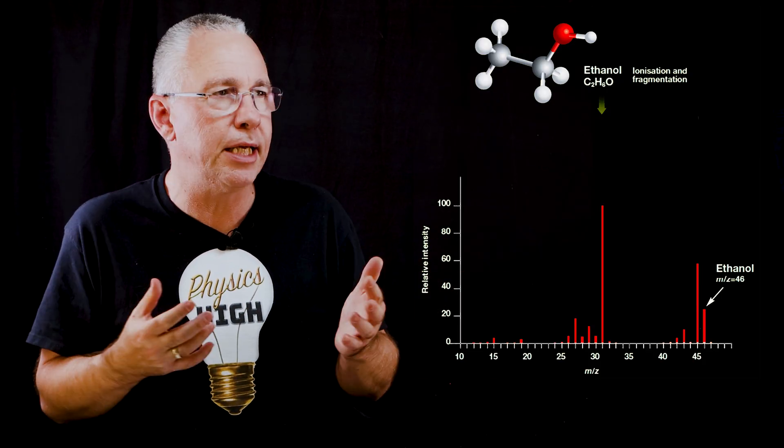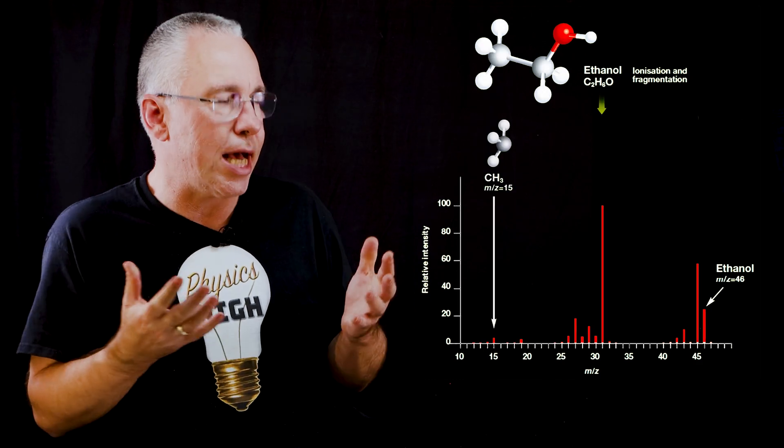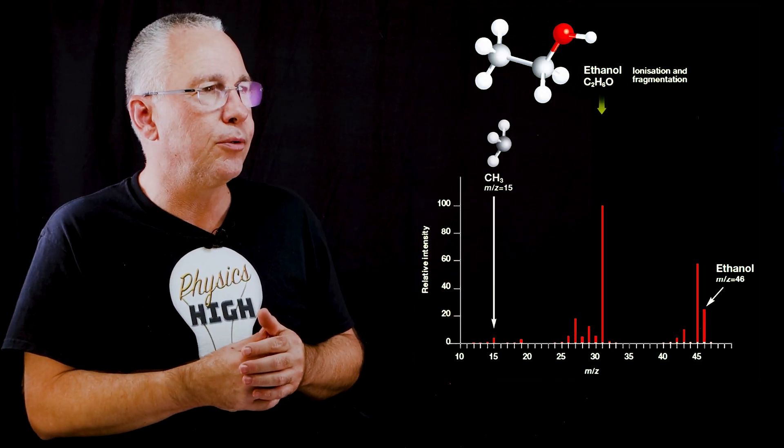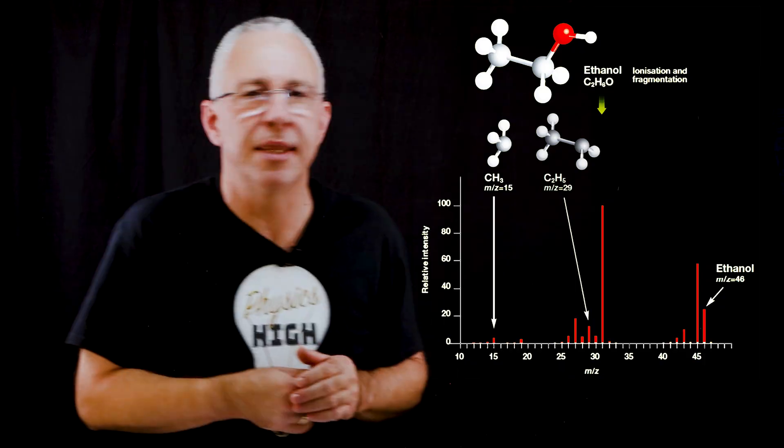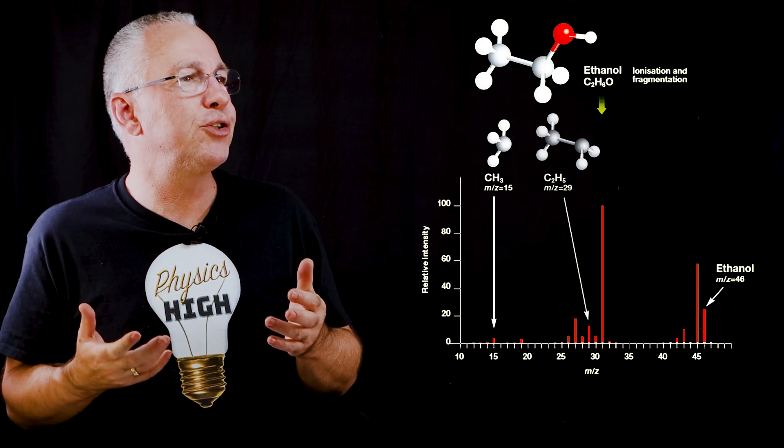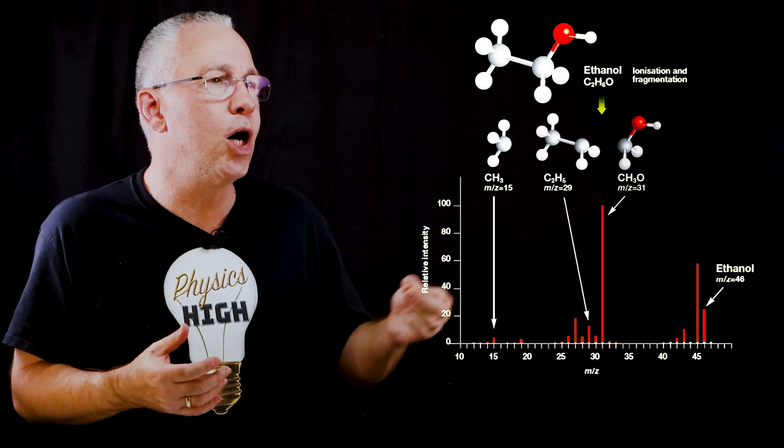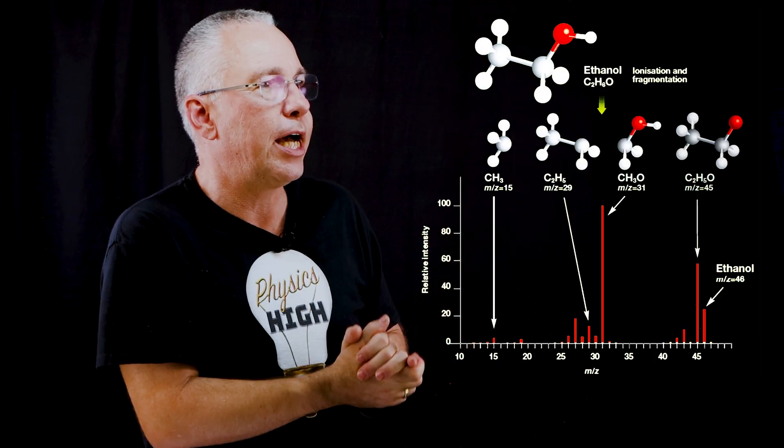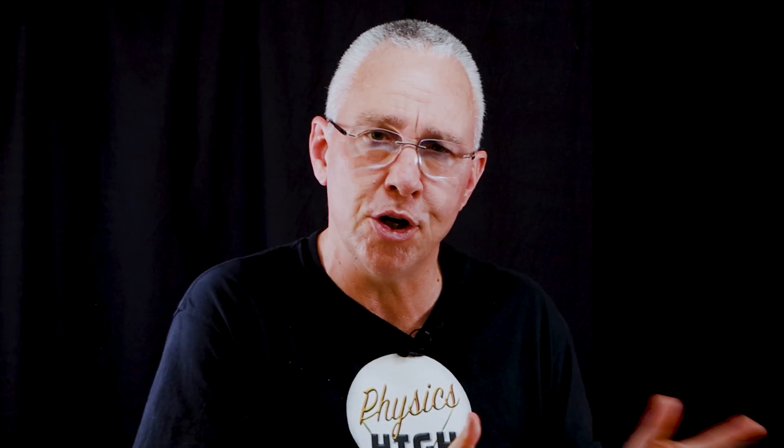Well, what happens is that the ethanol can fragment into a number of pieces. It might fragment into CH3, which has a mass number of 15. It might fragment into a molecule C2H5, and that would be the peak of 29. Now, what about the larger peak? What you have is CH3O. And then lastly, the one just shy of our final peak is C2H5O. So that summarizes how our mass spectrometer works and how you can interpret the data.